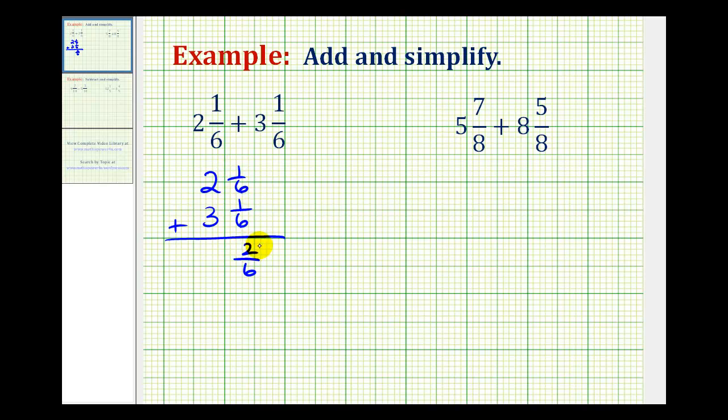One plus one is equal to two. And then looking at the whole numbers, two plus three is equal to five. Now, once we determine the sum of two mixed numbers, we have to check for two things.